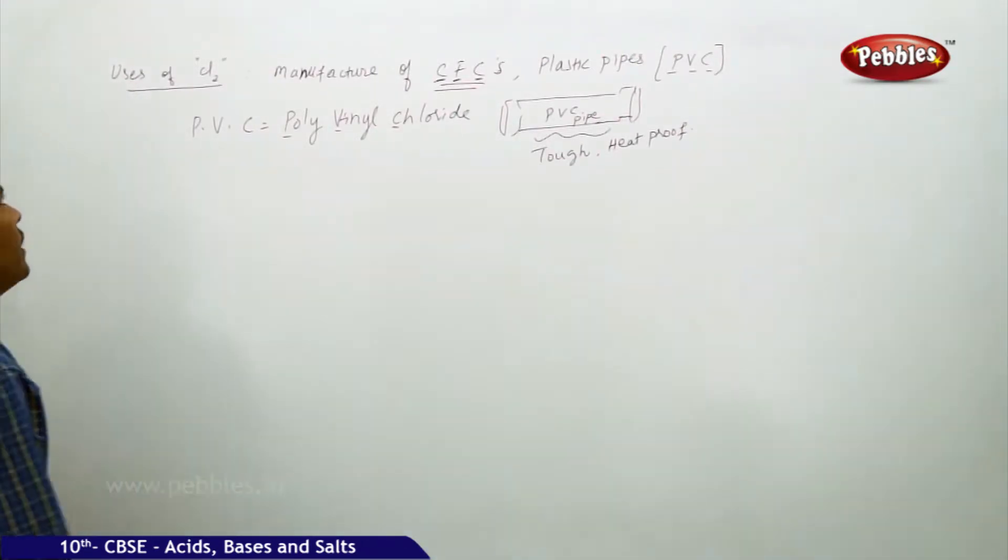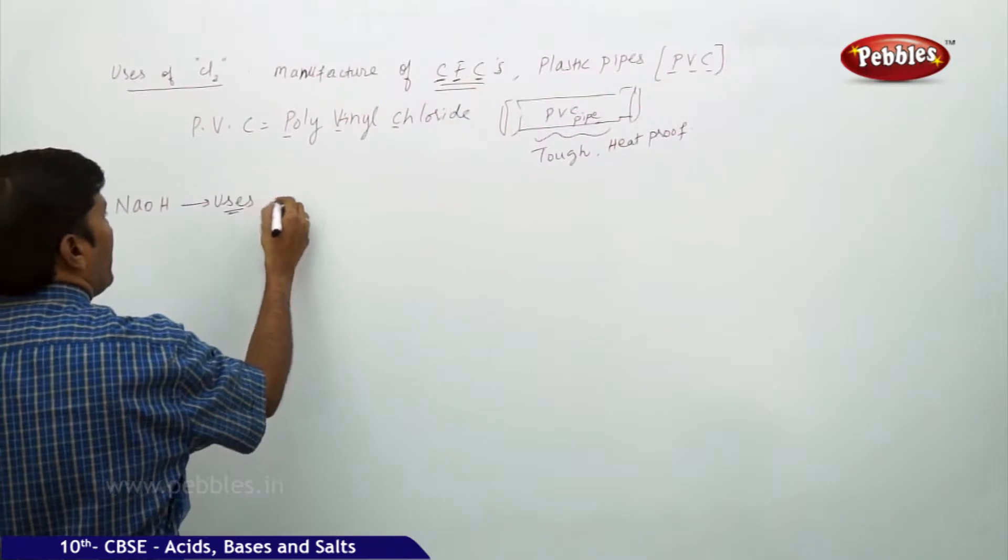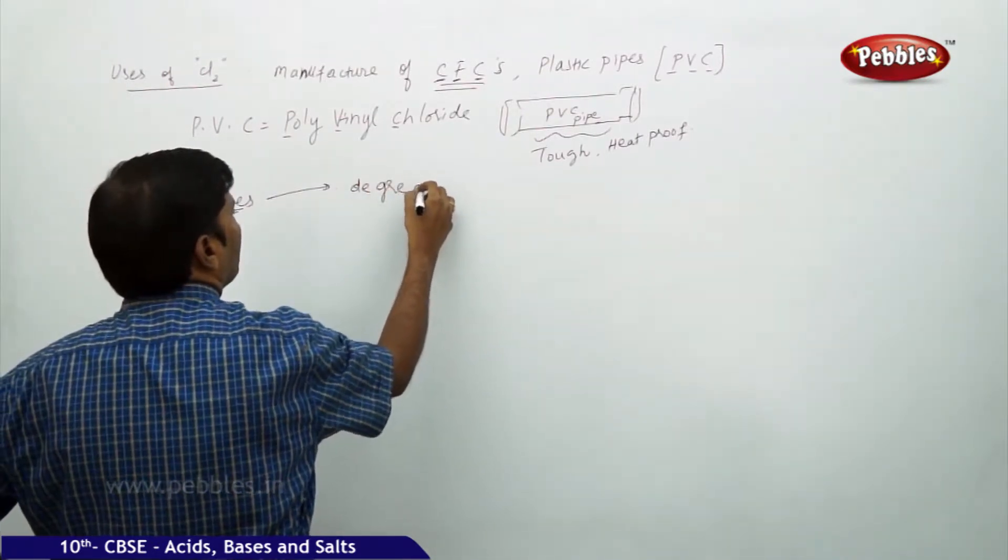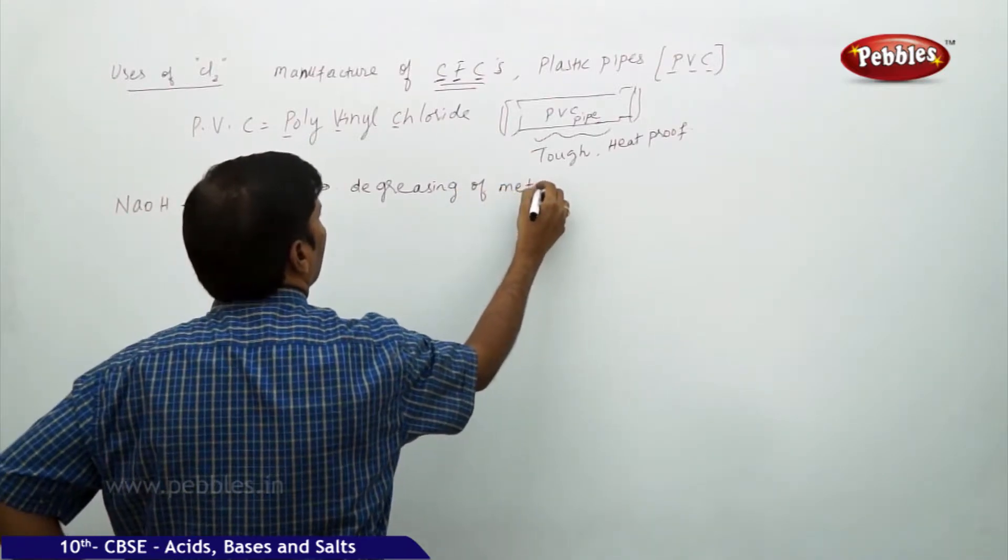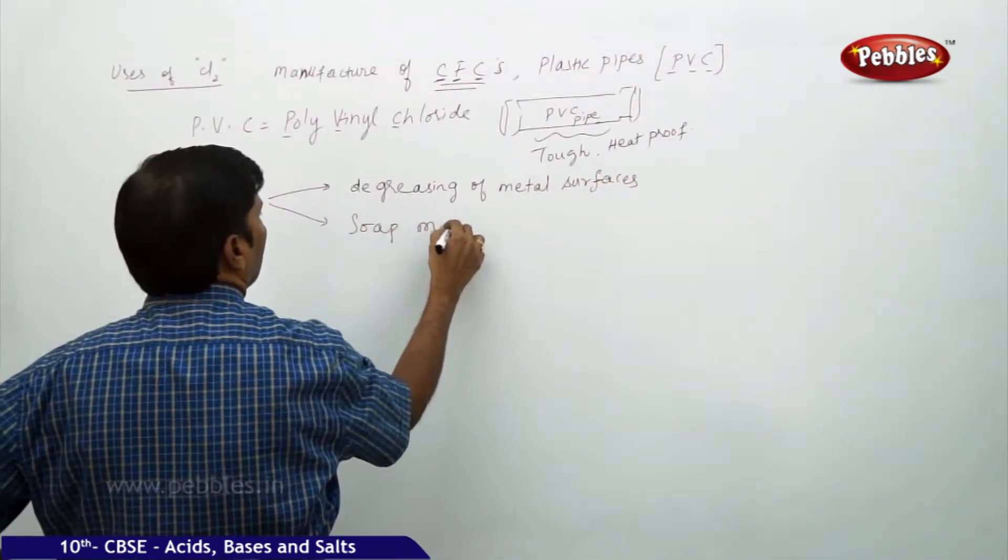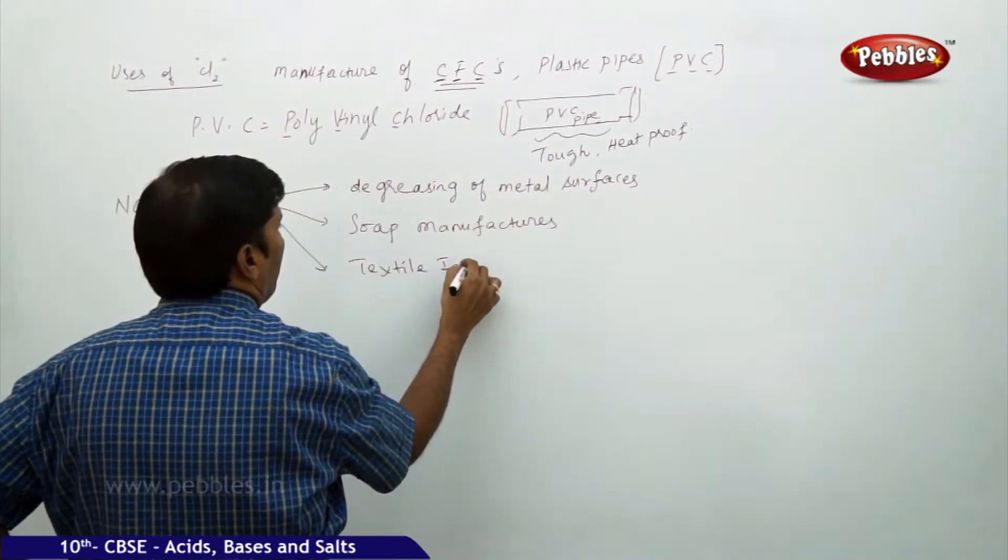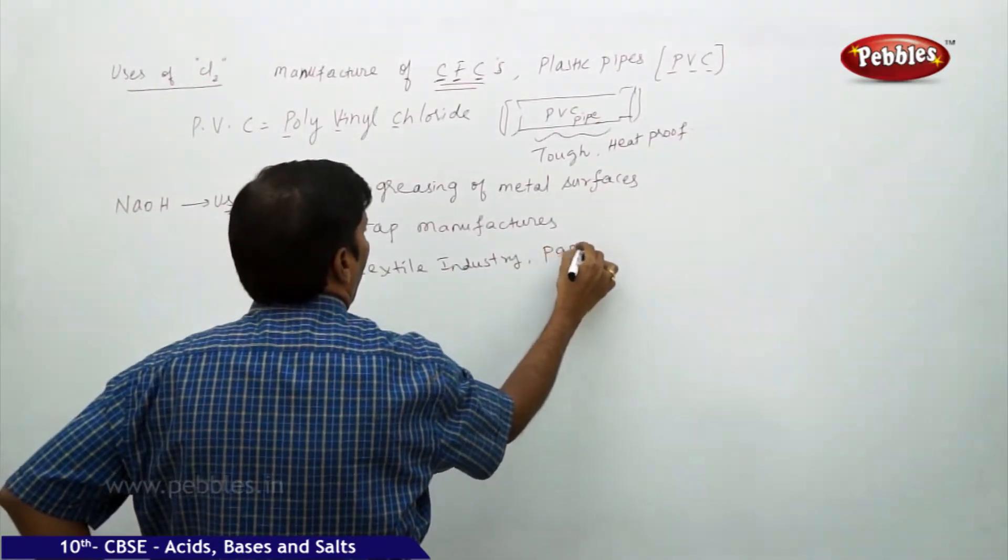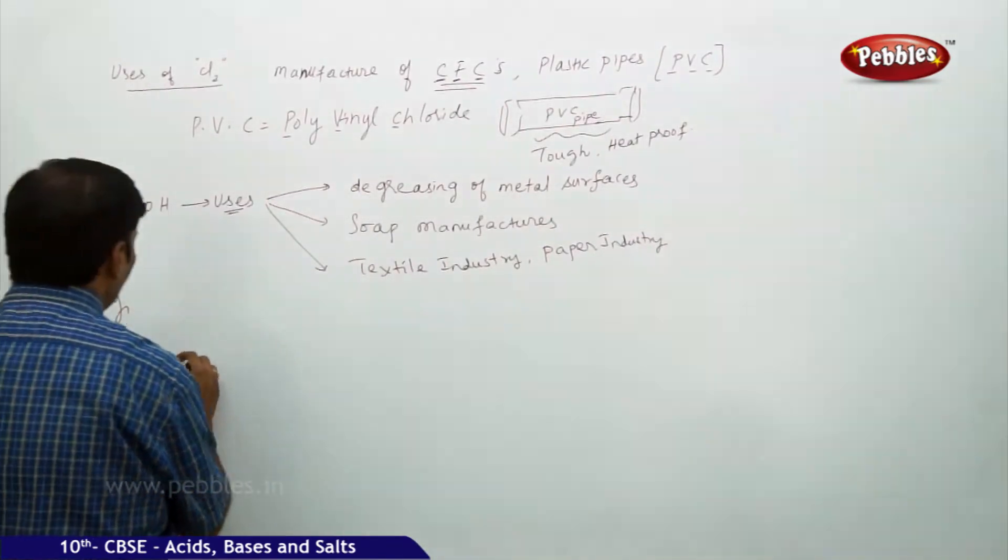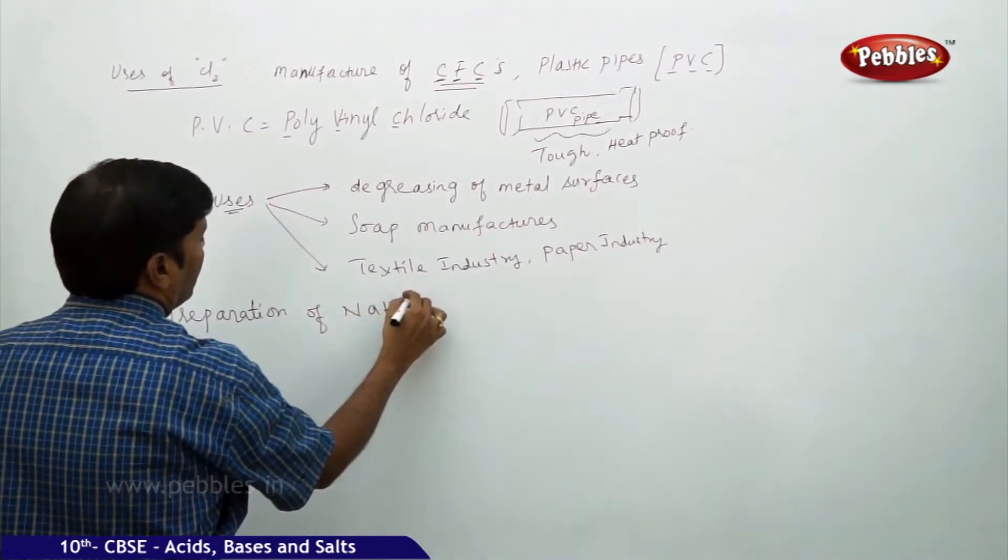They are very tough and synthetic, tough and heat proof. Likewise, chlorine is used in degreasing of metal surfaces, in soap manufacture, in textile and paper industry. Similarly, preparation of NaHCO3.